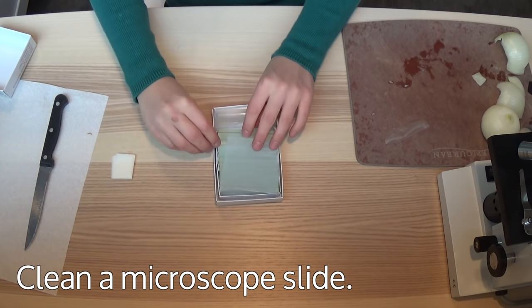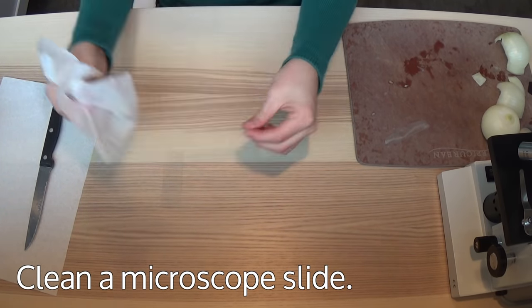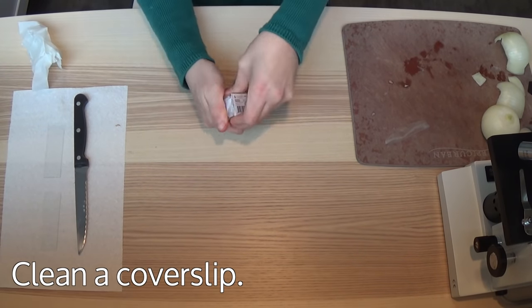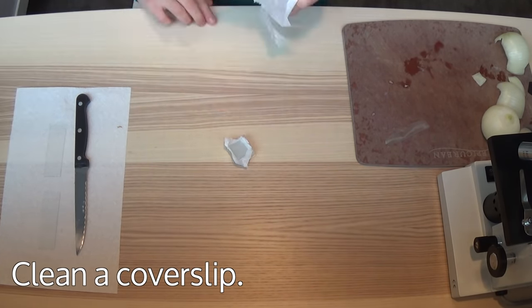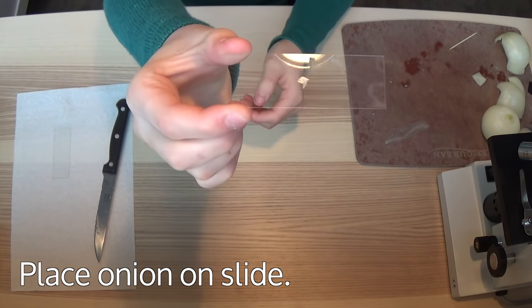Clean your microscope slide with an alcohol wipe. Do the same with a cover slip. Place your pieces of onion onto the slide, and reposition them with a toothpick.